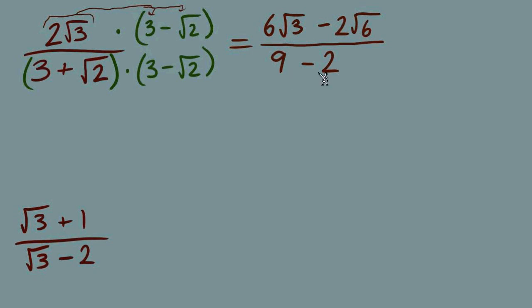Let's combine those like terms: 9 minus 2 equals 7. Finally, can we do any simplifying now with how it looks? Can we evenly divide from all three of our terms? No, and the radicals are simplified, so that is our finished answer.